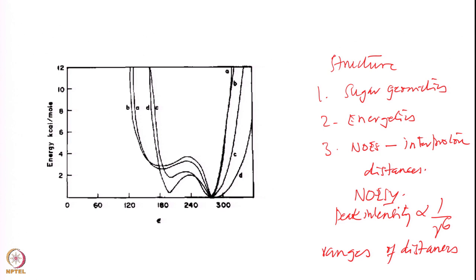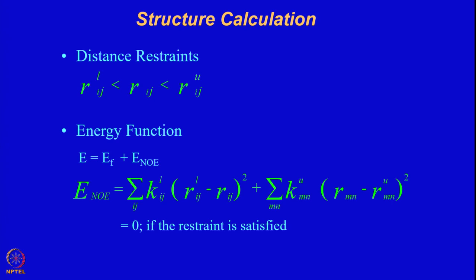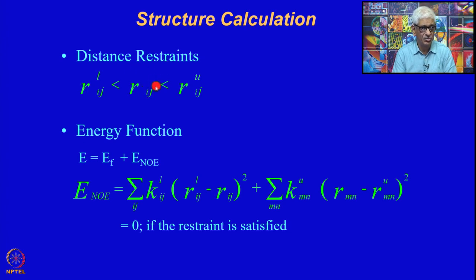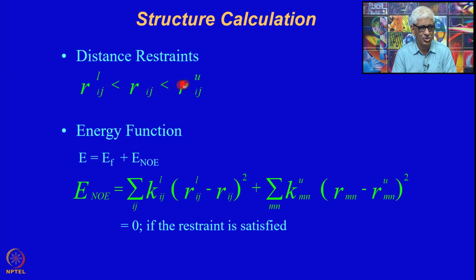We use these in a kind of an algorithm. You have here the distance constraints. You start with a particular model — in your model, the distance between two protons i and j is r_ij. From the NOESY spectrum you have a cross peak between i and j. From the cross peak intensity, you say this distance should be between a lower limit and an upper limit. The upper limit cannot be more than 5 Angstroms. Based on the intensities, the distance can be between 2.5 and 3.5, or 3 and 4, or 3.5 and 4.5 — different ranges depending on peak intensities.